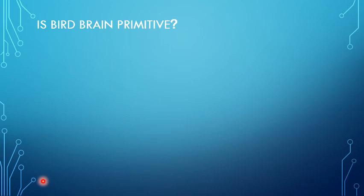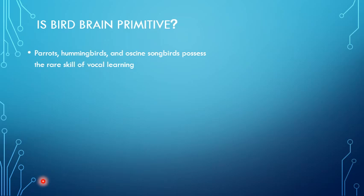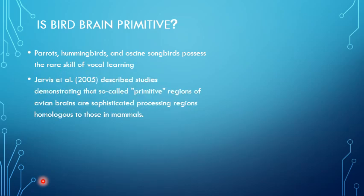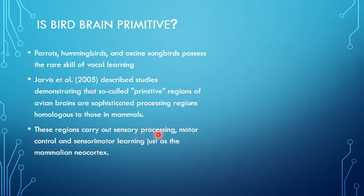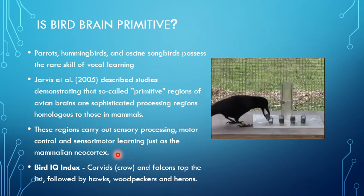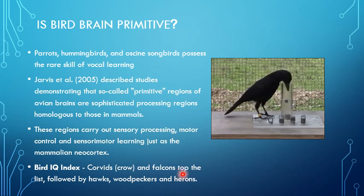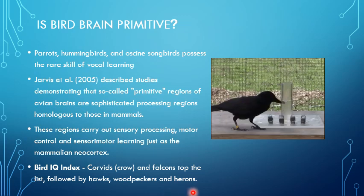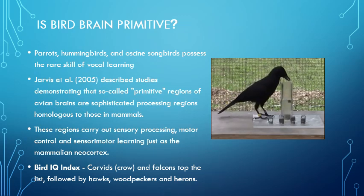After meeting Einstein the parrot, we know that parrots, hummingbirds, and other songbirds possess the rare skill of vocal learning — they can memorize sounds and repeat them. Jarvis et al. described studies demonstrating that these so-called primitive regions of bird brains are actually very sophisticated processing regions, homologous to those in mammals. These regions can carry out sensory processing, motor control, and learning, just as the mammalian neocortex. Even a bird IQ index has been built — crows and falcons are the most intelligent birds, followed by hawks, woodpeckers, and herons.